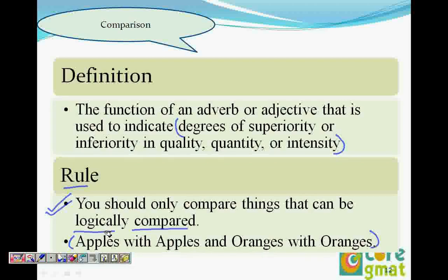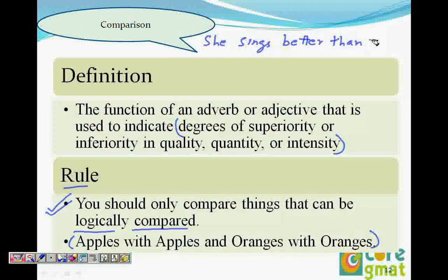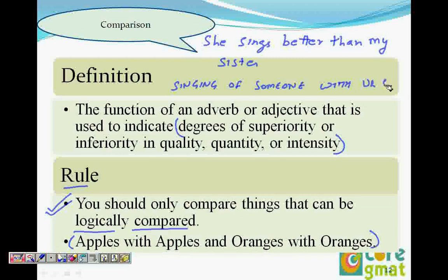For example, if we say 'she sings better than my sister,' what am I comparing? I am comparing her singing with my sister — not my sister's singing. I cannot compare her singing with my sister. I have to say 'she sings better than my sister does.' So I will compare her singing with my sister's singing. You put 'does' and this becomes logical.